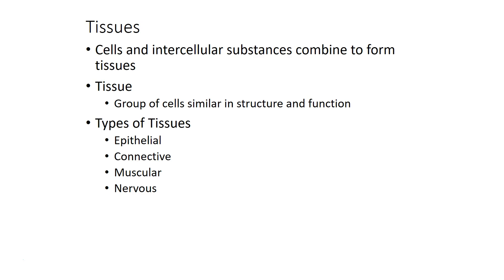Tissues are very important to us because these are the smallest gross anatomical structure that has some useful form and function. We're going to go into a fair amount of detail on different types of tissues: epithelial tissues, connective tissues, muscular tissues, and nervous tissues.